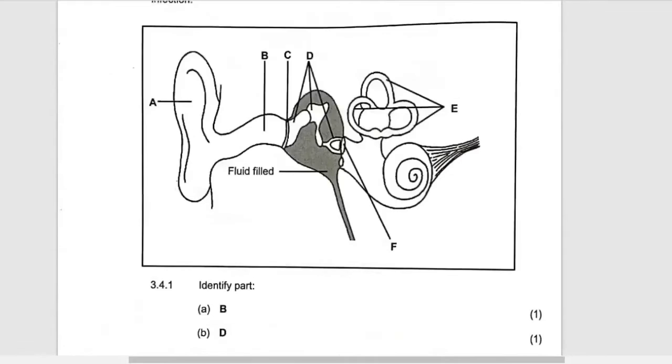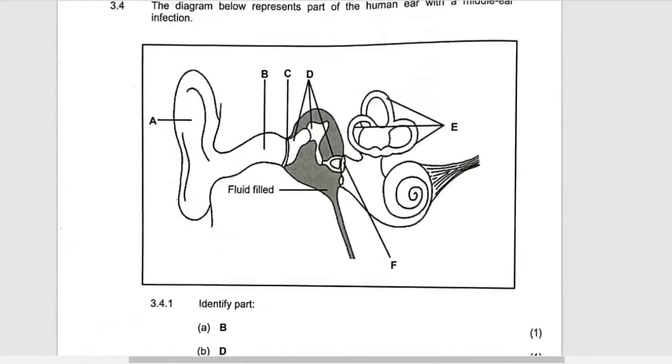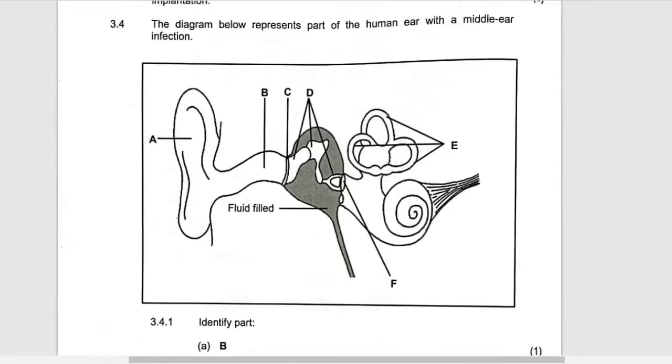State the one function of A. This one is collect and direct sound waves to the auditory canal. It collects sound waves from different directions and then does not only collect, it directs all of it which has come there. It's being directed to what? To the auditory canal.